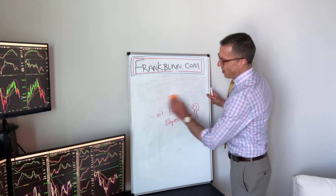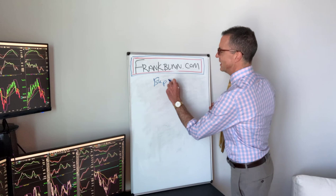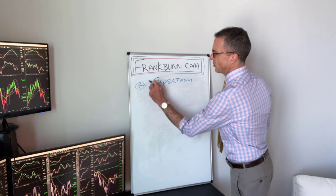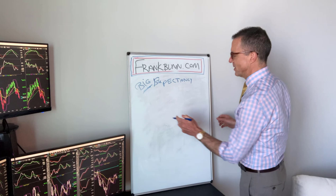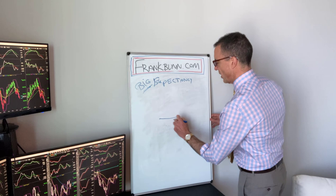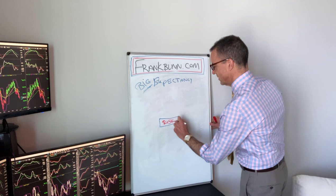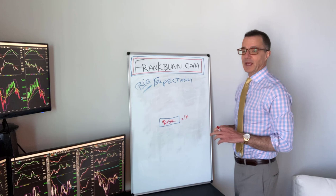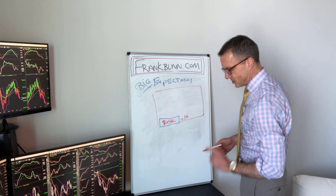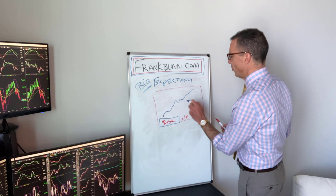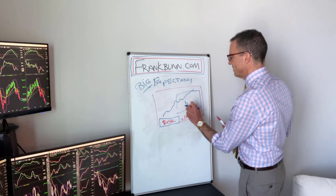So by big expectancy, what we're talking about — you have to begin with the end in mind, and that's what's really crucial about this. Big expectancy has everything to do with risk gains and how we play them. So what we want to do is establish a context where our risk is going to be fixed — our risk is going to be equal to what we're going to call 1x. So we're going to risk 1x, but what we want to achieve for our goal is going to be 5 to 10 times that risk.